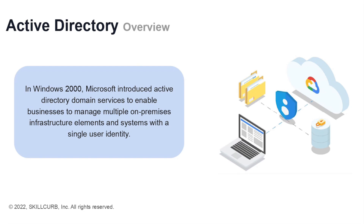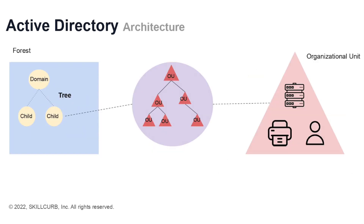In Windows 2000, Microsoft introduced Active Directory domain services to enable businesses to manage multiple on-premises infrastructure elements and systems with a single user identity. Here's an architectural diagram. You have your enterprise, which is the forest, and these are made up of domains.